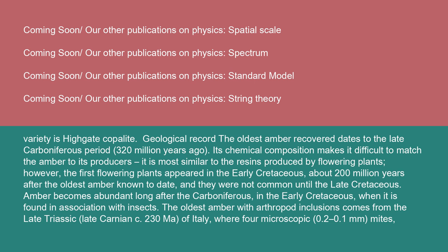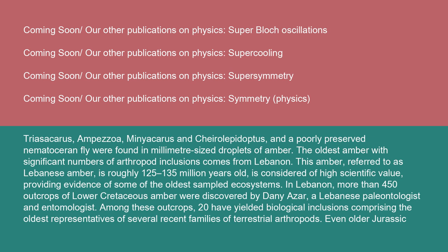The oldest amber with arthropod inclusions comes from the late Triassic (late Carnian, 230 Ma) of Italy, where four microscopic mites — Triasacarus, Ampezzoa, Minyacarus, and Cheirolepidiopterus — and a poorly preserved nematoceran fly were found in millimeter-sized droplets of amber. The oldest amber with significant numbers of arthropod inclusions comes from Lebanon. This amber, referred to as Lebanese amber, is roughly 125 to 135 million years old, is considered of high scientific value, providing evidence of some of the oldest sampled ecosystems. In Lebanon, more than 450 outcrops of lower Cretaceous amber were discovered by Danny Azar, a Lebanese paleontologist and entomologist.